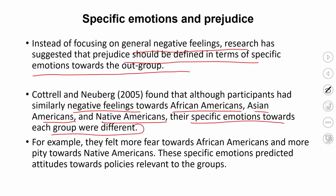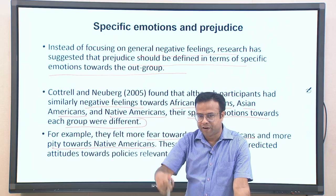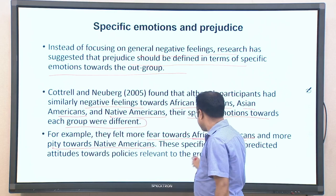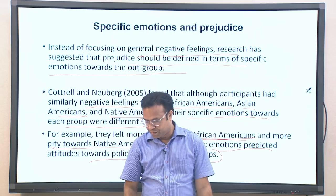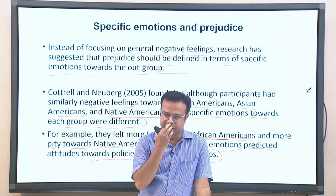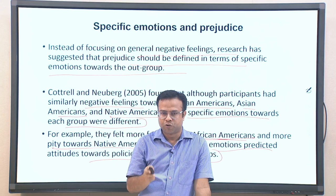For each of these groups, specific emotions were very different. For example, participants felt more fear towards African-Americans, while pity was more associated with Native Americans. Both could be considered negative emotions broadly, but the specific emotions were different. These specific emotions actually better predicted participants' actual attitudes and policies they advocated towards each group. Knowing the specifics of the emotions gives a much clearer idea of how people take their attitudes — it is a much better predictor.